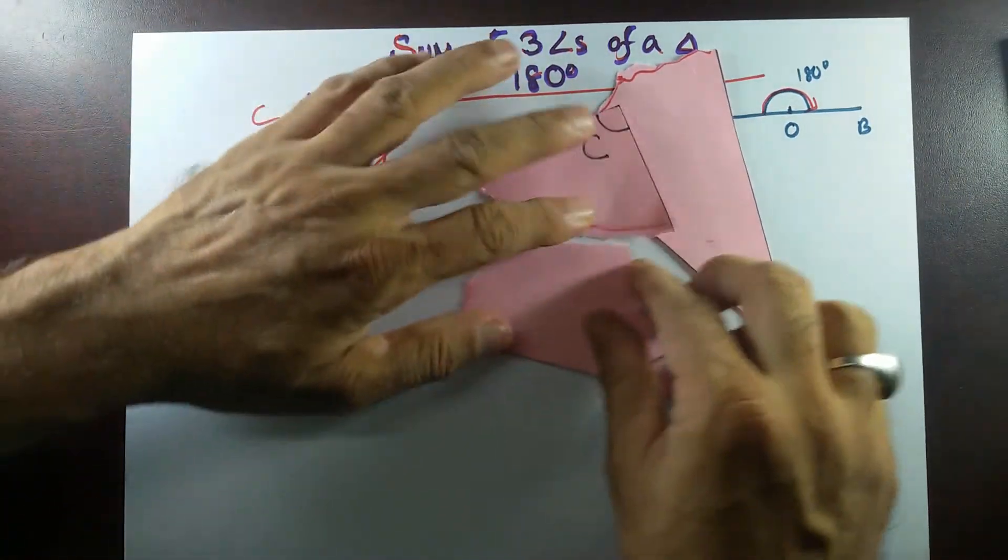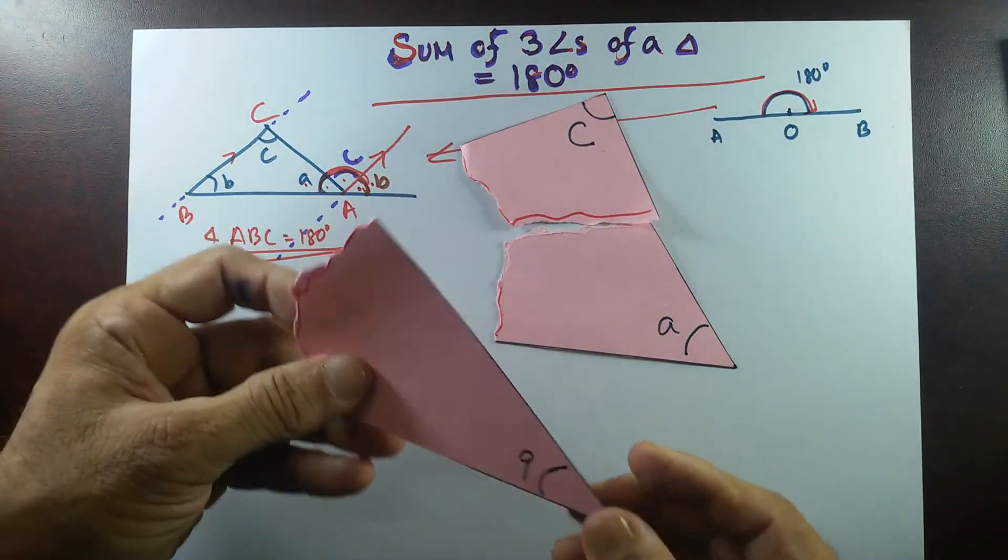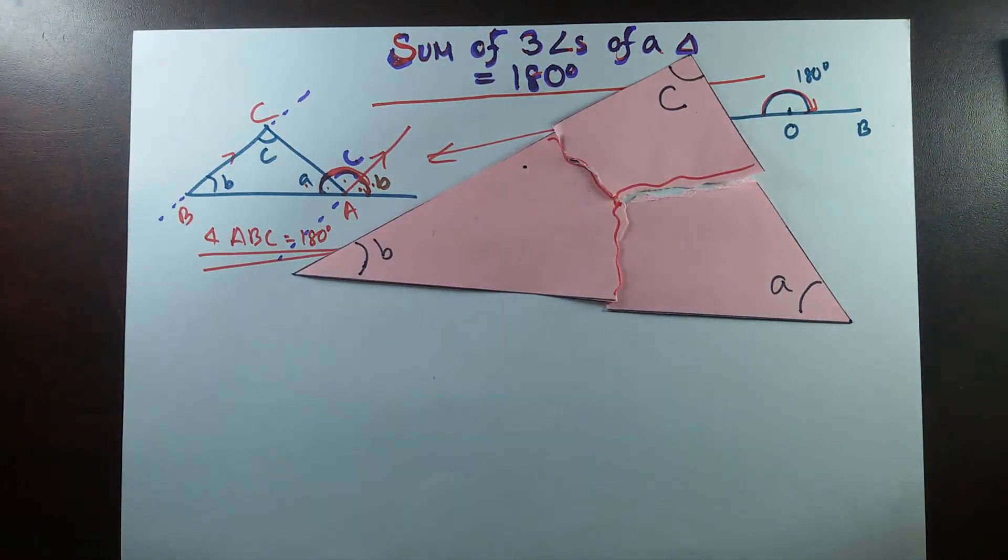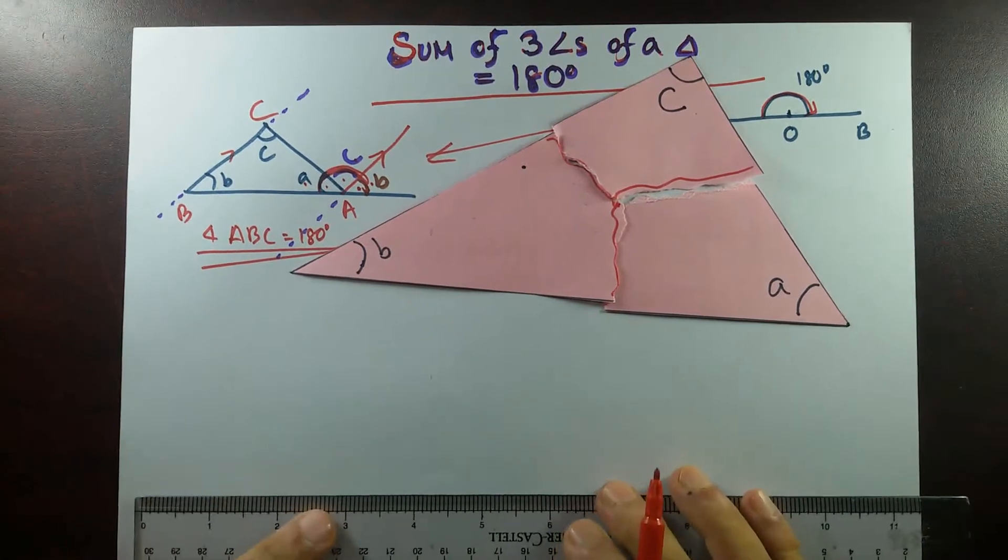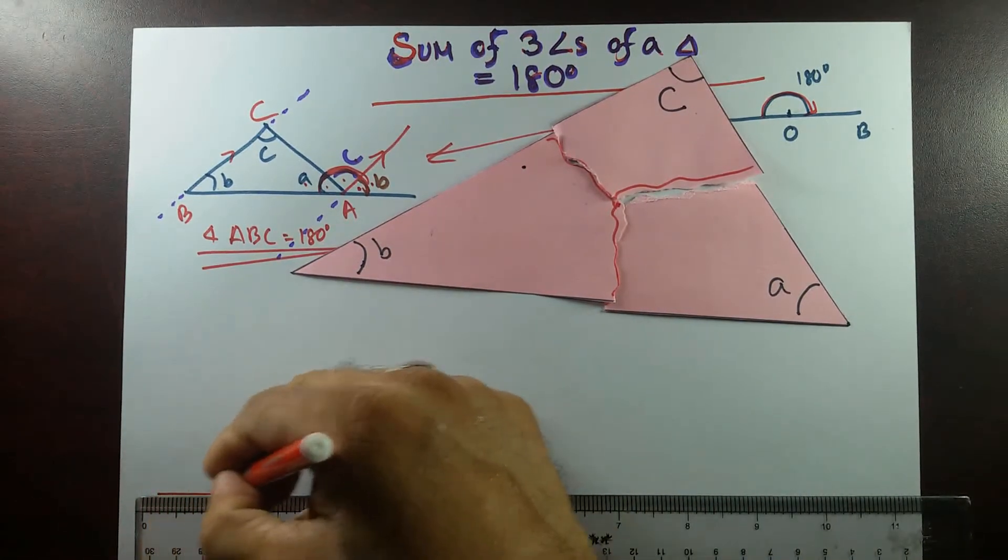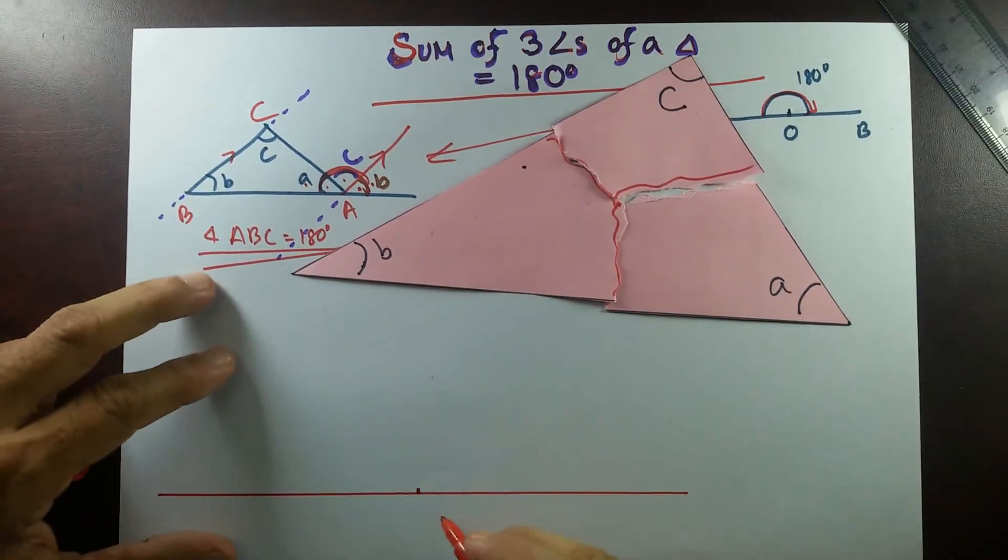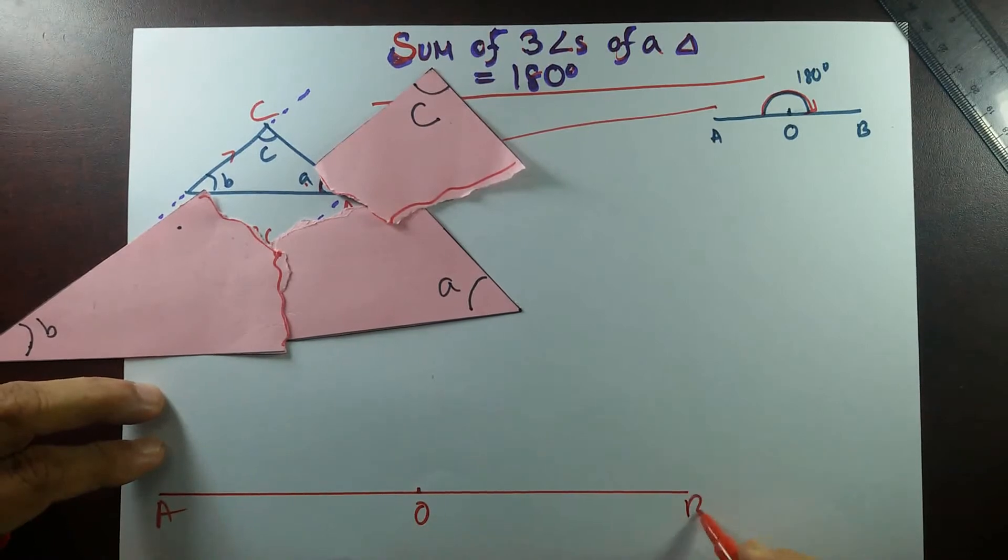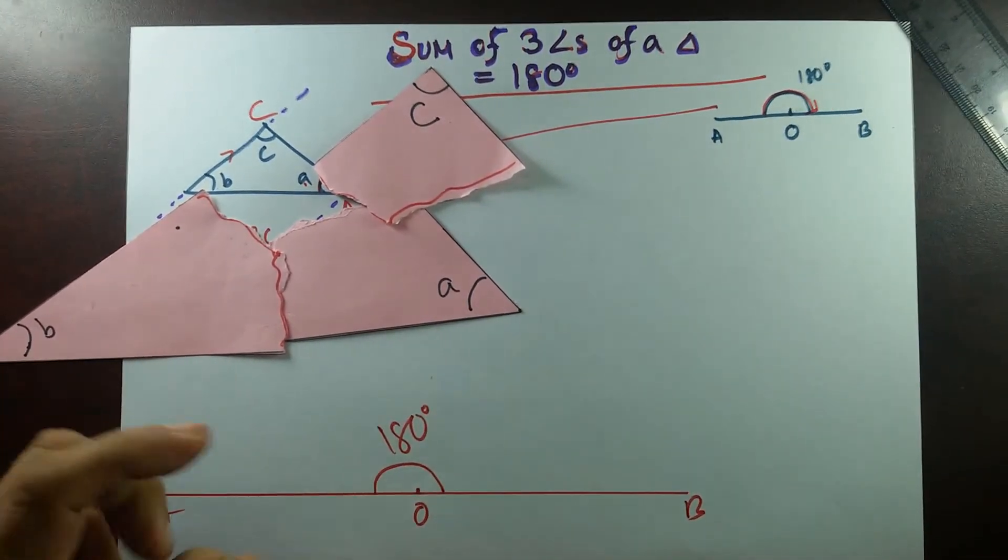I'll just rip it out. Remember it was like this: A, B, C. Let me find my scale. If I draw a straight line, and let's put this point O over here. So A, B, and this O. This is 180 degrees.